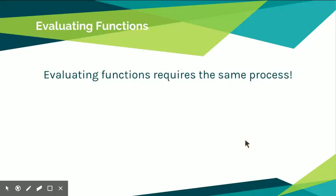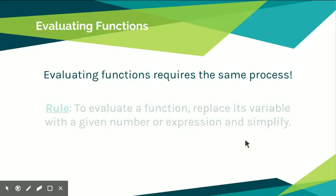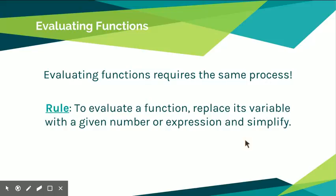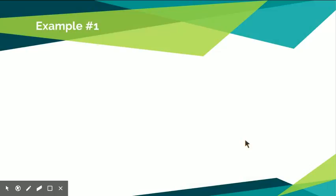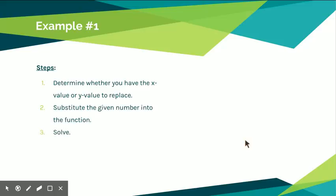Evaluating functions requires the same process. To evaluate a function, you replace the variable with a given number or expression and simplify. The steps are: first, figure out whether you're substituting into the x value or the f of x value; then substitute it in; then solve.